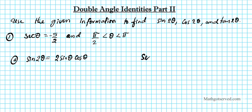If secant theta equals negative 5 over 2, which of these two trig functions can we easily determine? We know that secant is the reciprocal of cosine. So if secant theta is negative 5 over 2, it follows that cos θ is the reciprocal of secant. So cos θ equals negative 2 over 5. We now have one of the ingredients to generate sin 2θ.